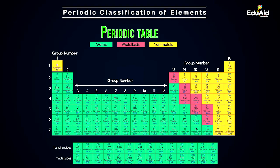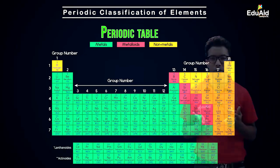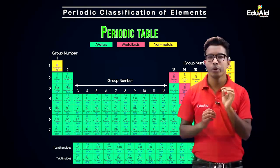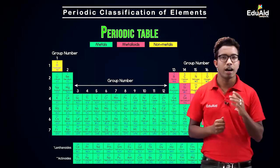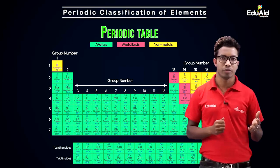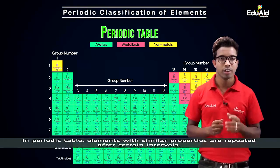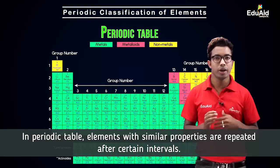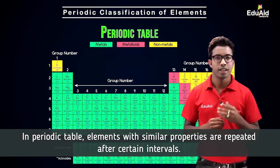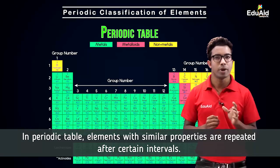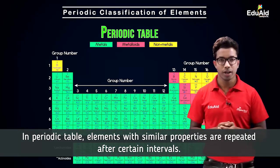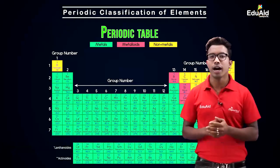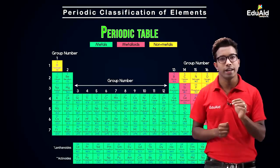So what is the reason behind naming it the periodic table? 'Periodic' means repeating after certain intervals. In this table, similar properties are repeated after certain intervals, which is why this table is named the periodic table. In this table all 118 atoms present in our universe are arranged according to their properties.